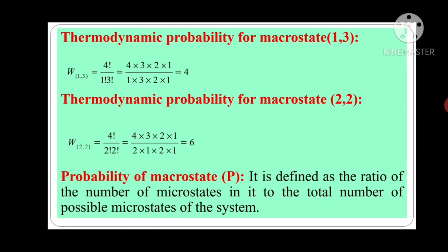Now, we will see the thermodynamic probability for macrostate (1,3). So, W for macrostate (1,3) is equal to 4 factorial upon 1 factorial into 3 factorial. Here, n minus r equals 4 minus 1, which is 3. So, 4 factorial upon 1 factorial into 3 factorial is equal to 4 into 3 into 2 into 1 upon 1 into 3 into 2 into 1, which gives a value of 4.